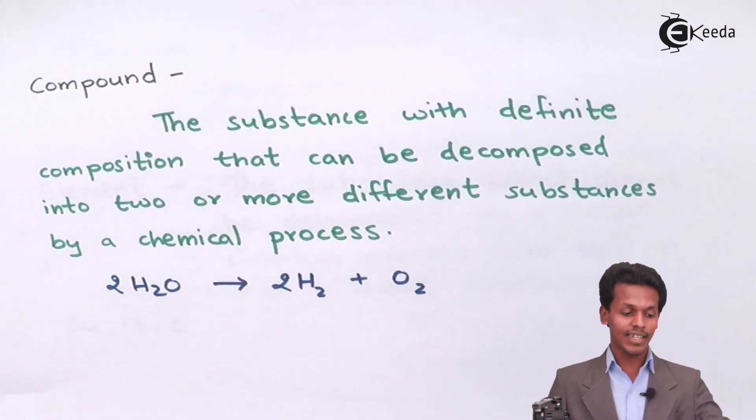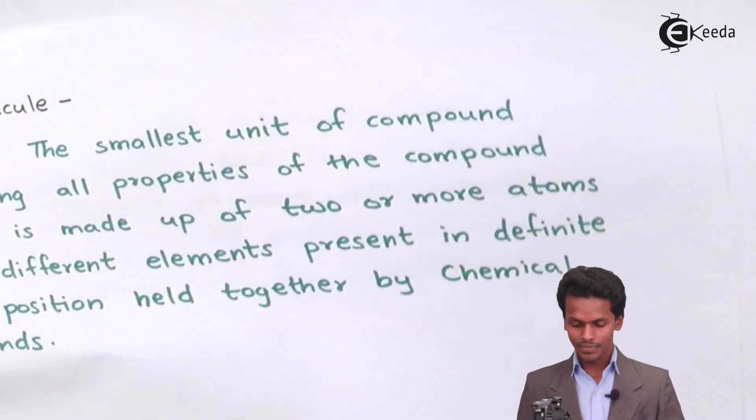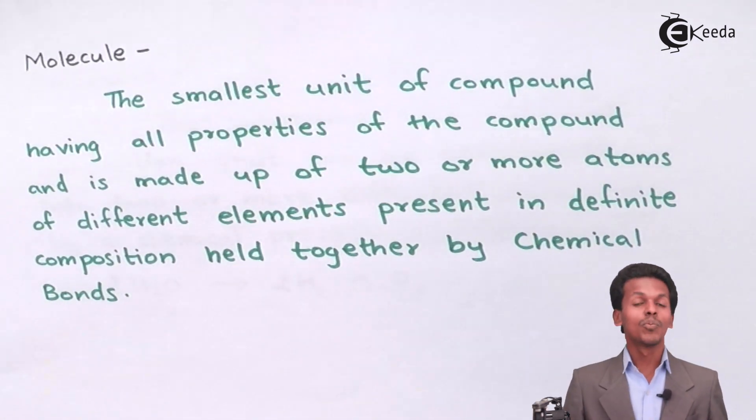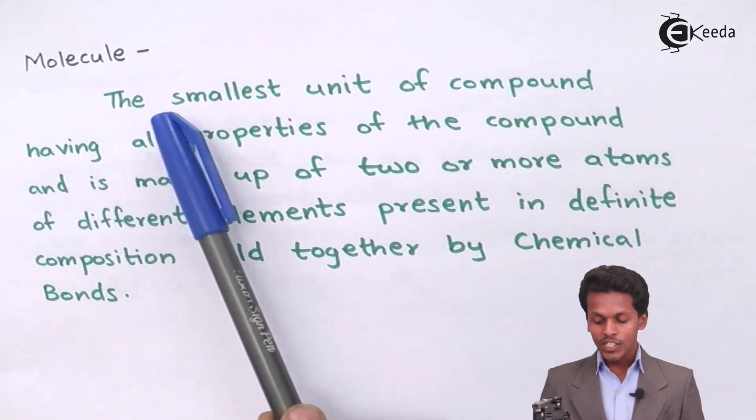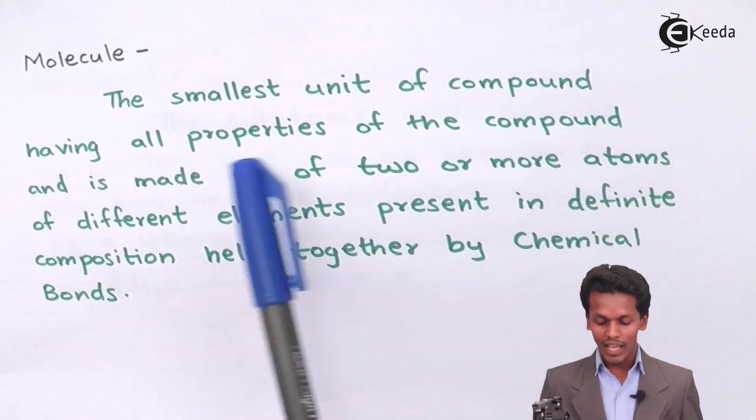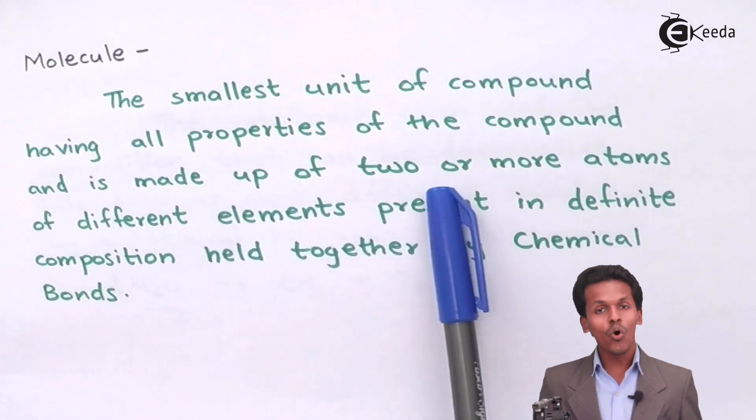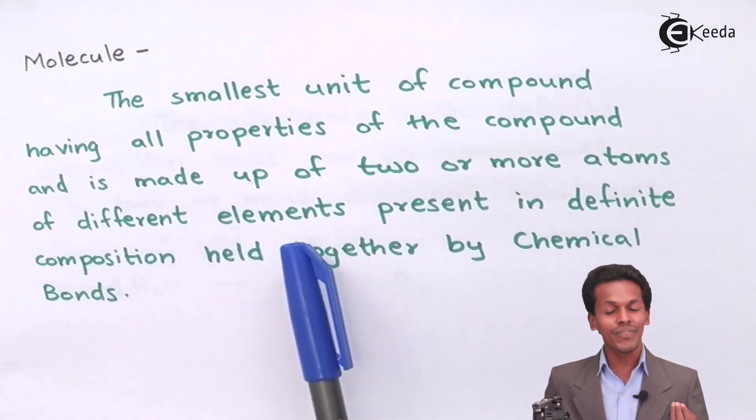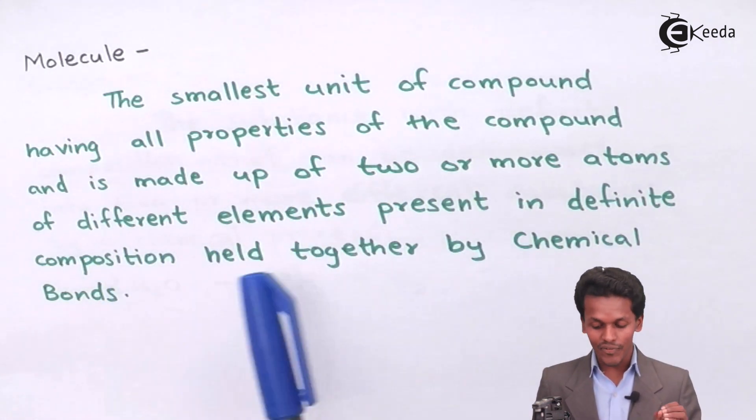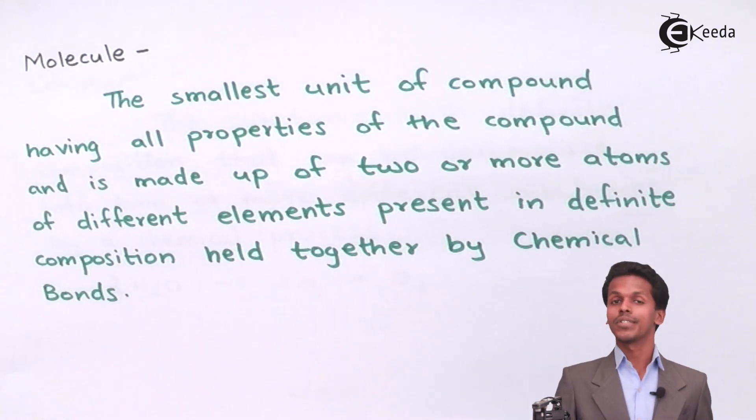And talking about the last part, that is molecule. So molecule means the smallest unit of a compound having all the properties of the compound and is made up of two or more atoms of different elements present in definite composition and held together by chemical bonds.